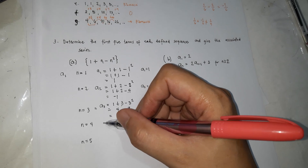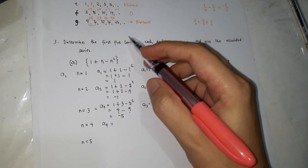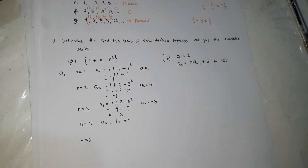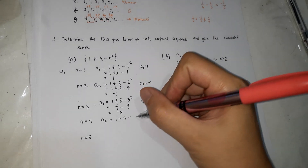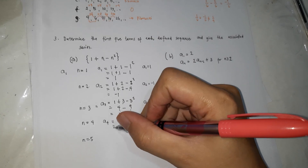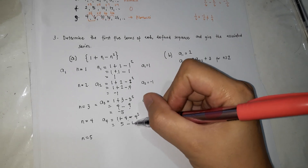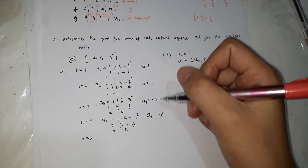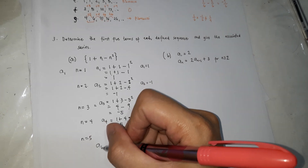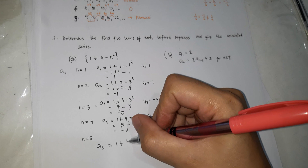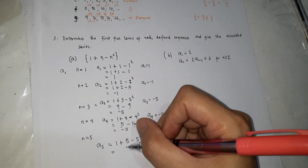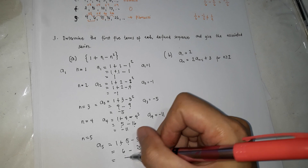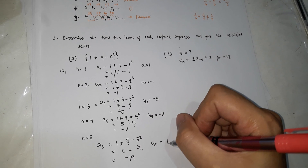When n=4, that's a4: 1 plus (4 minus 4²) = 1 plus 4 is 5, minus 16 — that's negative 11. So a4 is negative 11. For a5, n=5: 1 plus (5 minus 5²) = 1 plus 5 is 6, minus 25 — that's negative 19. So a5 is negative 19.